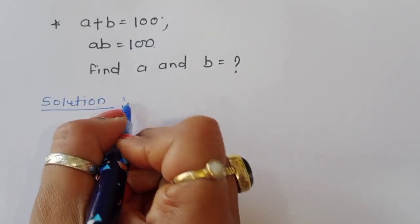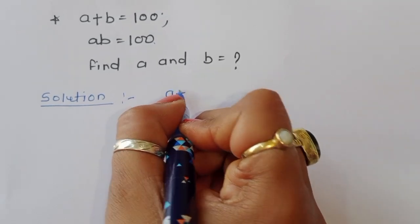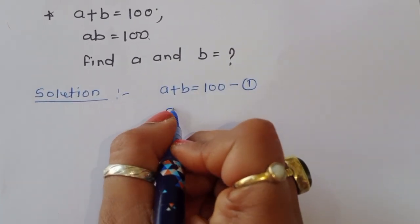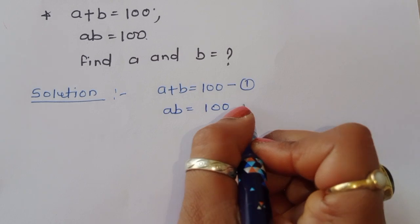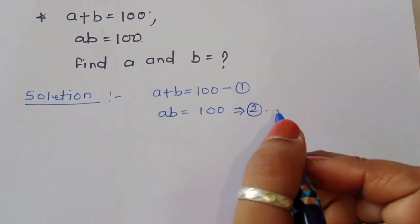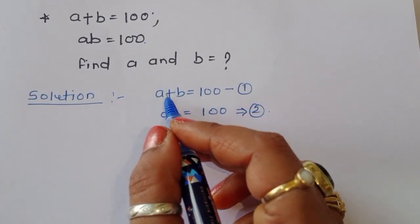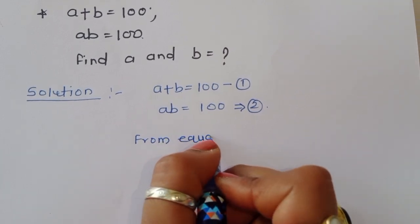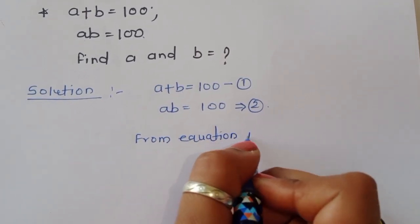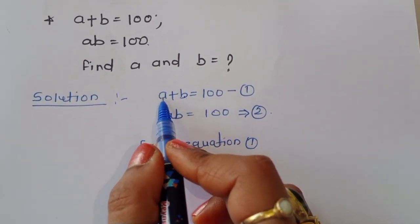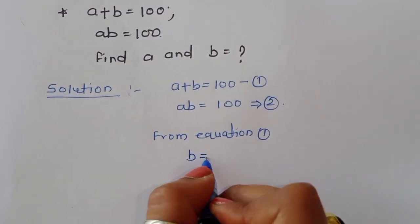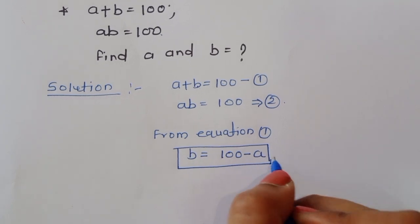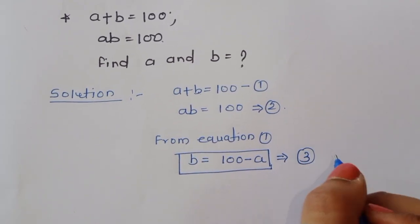Two equations are given. The first one is a plus b is equal to 100 — this is equation 1. The next one is ab is equal to 100 — this is equation 2. From equation 1, we can write b is equal to 100 minus a. This is equation 3.